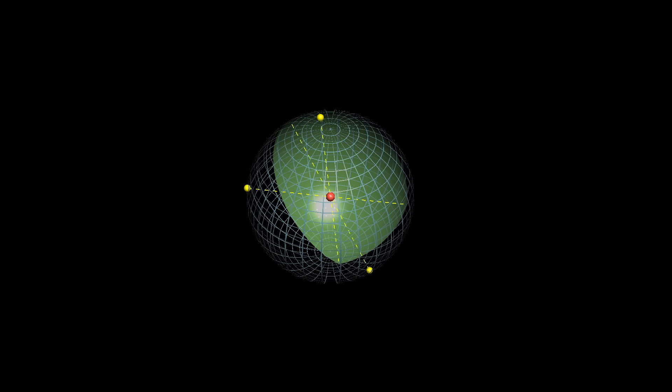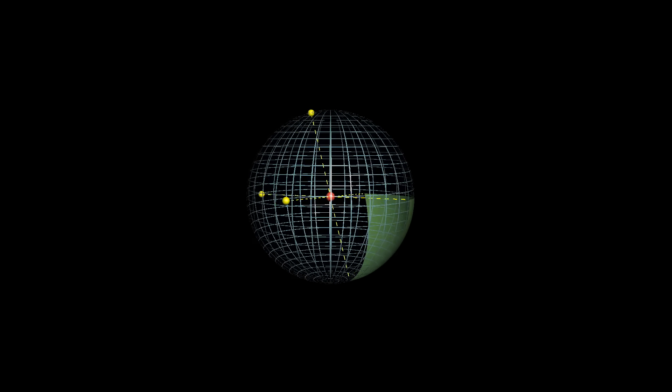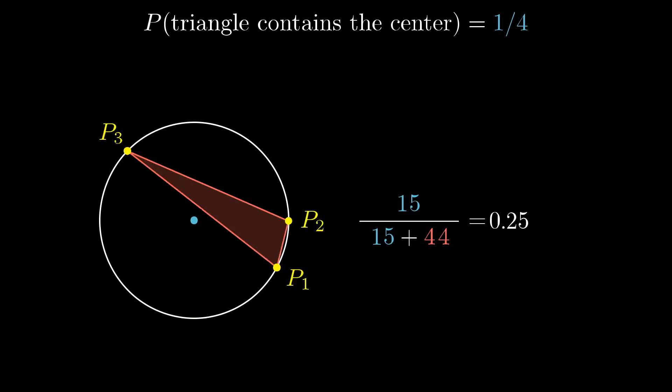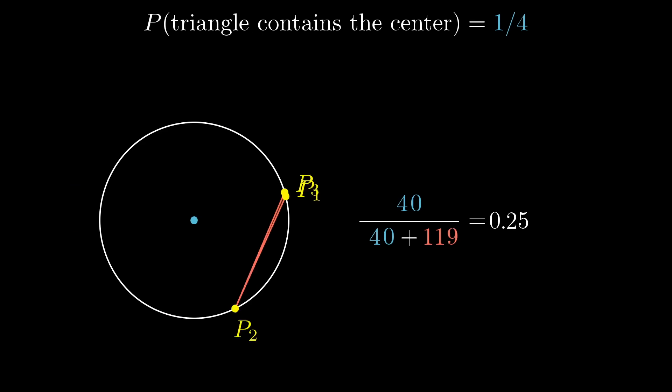And what do you even do with that? Well, one thing you can do is back up to the two-dimensional case and contemplate if there is a different way to think about the same answer that we got. That answer, one-fourth, looks suspiciously clean, and it raises the question of what that 4 represents.